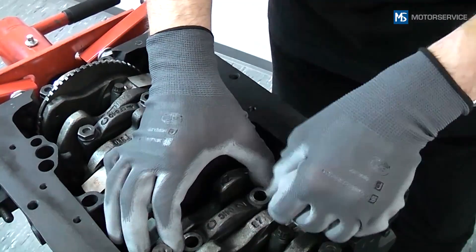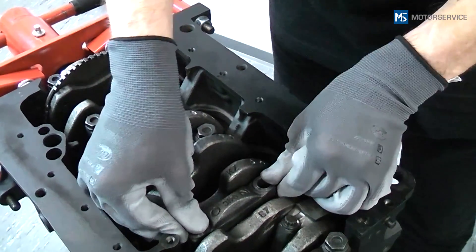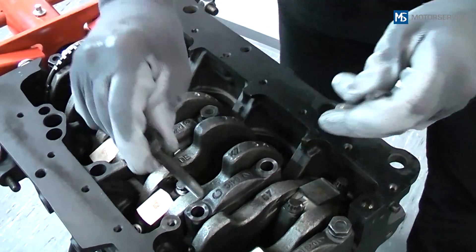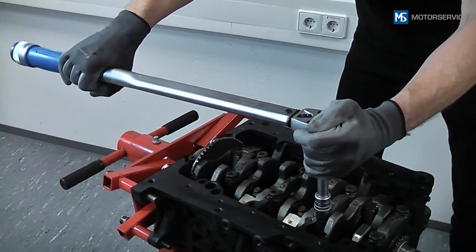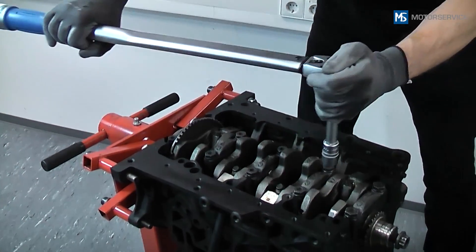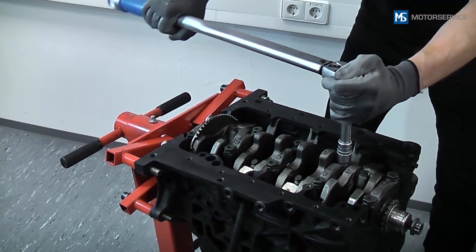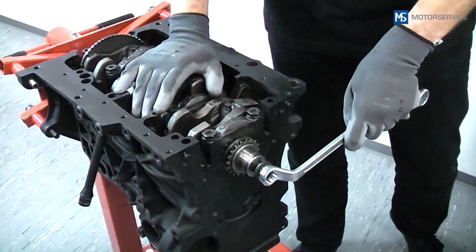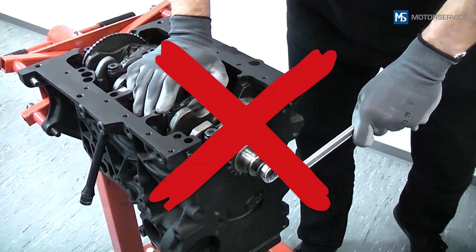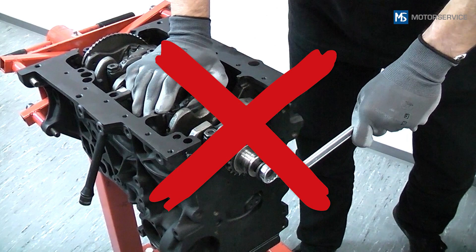The bearing cap is now fitted and tightened to the tightening torque specified by the engine manufacturer. Be sure not to turn the shaft during the measurement, as this would smear the filament and distort the measuring result.